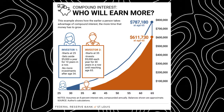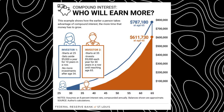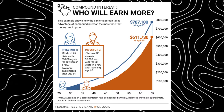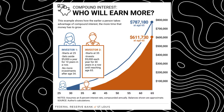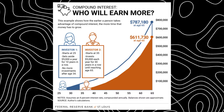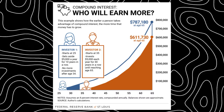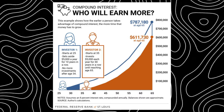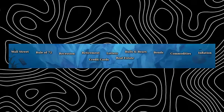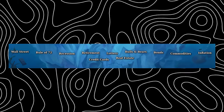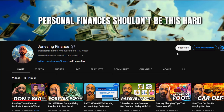Investing $1,000 at age 18 can grow to over $24,000 by retirement by doing nothing. But if you wait until age 25 — just seven years later — you'd only see $15,000. That's a $9,000 difference just for starting late. Compounding calculators show why starting early is key to building wealth: the longer your time horizon and the better your returns, the more powerful the effect.